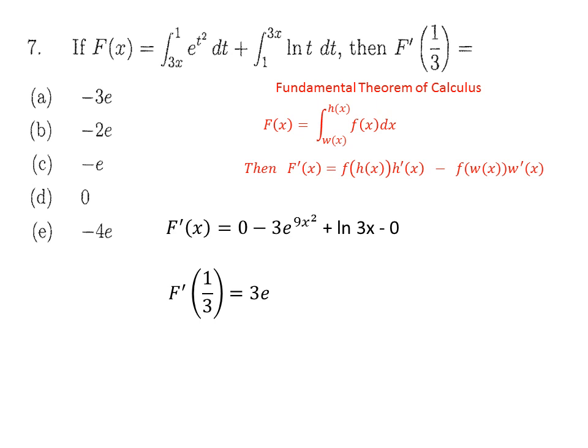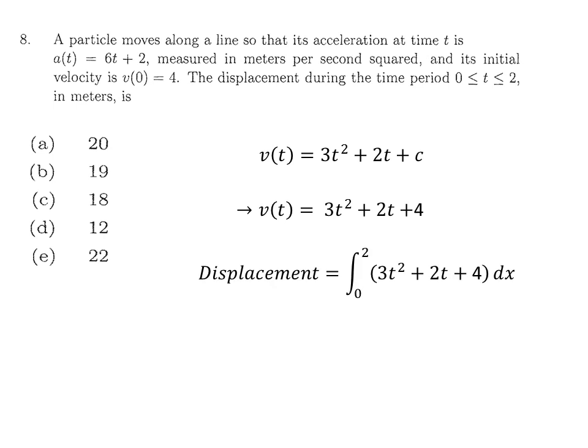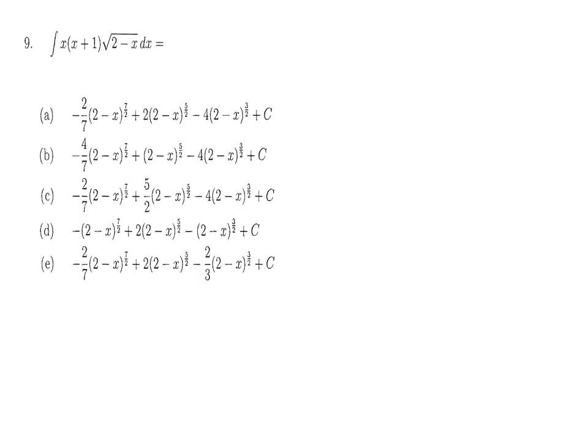For question 8, a particle moves along a line and the acceleration equation is given. By integrating the acceleration we find the velocity, then use the initial velocity condition to find the constant. For displacement, we evaluate the integral of the velocity function by finding the anti-derivative of each term using the power rule, then plug in the upper and lower limits to get 20.